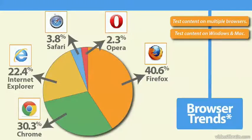Testing your content on different platforms such as Windows and Mac is always a good idea. Colors can shift and look different, and submit buttons and other pieces of content on your webpage can definitely look different depending not only on the browser, but also on the platform you're using.